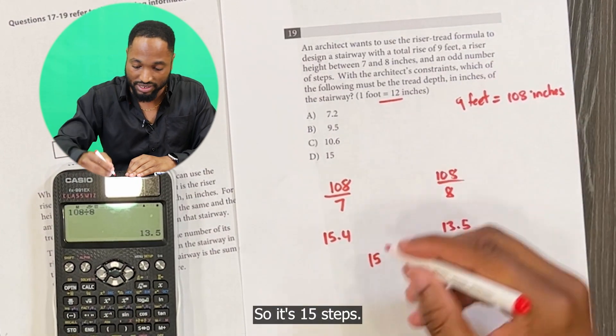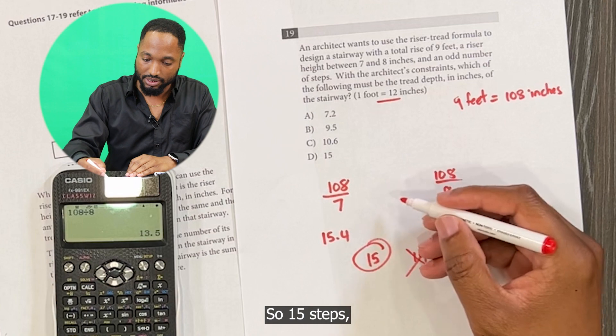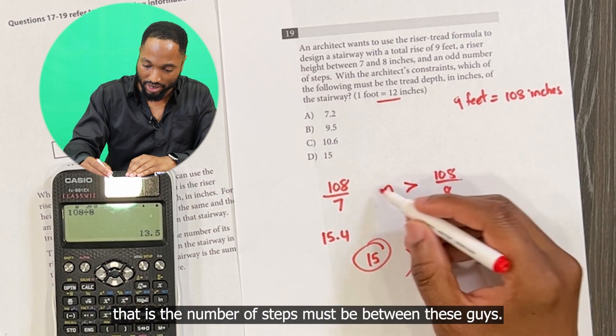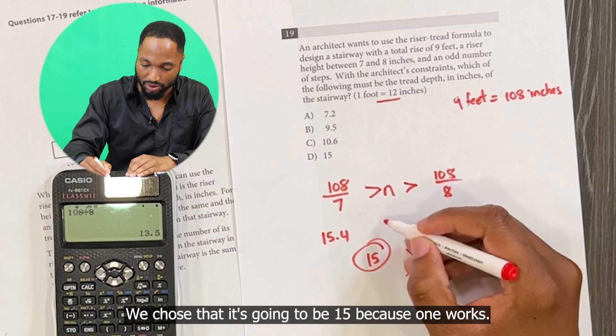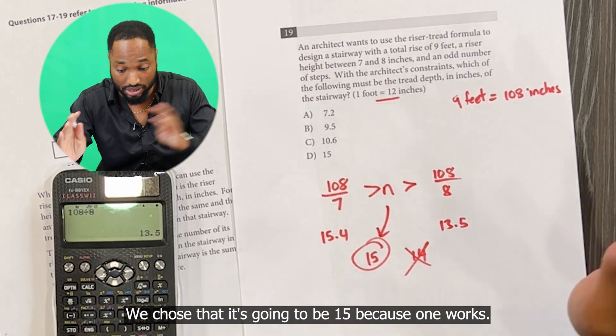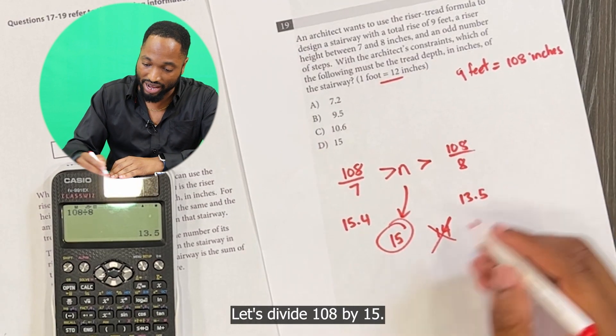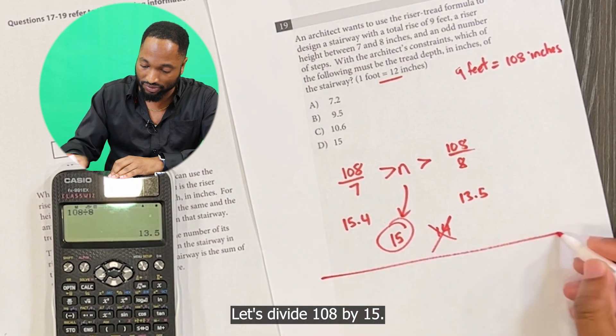So it's 15 steps. 15 steps, that is the number of steps, must be between these guys. We chose that it's going to be 15 because that one works. Now that we know it's 15 steps, let's divide 108 by 15.